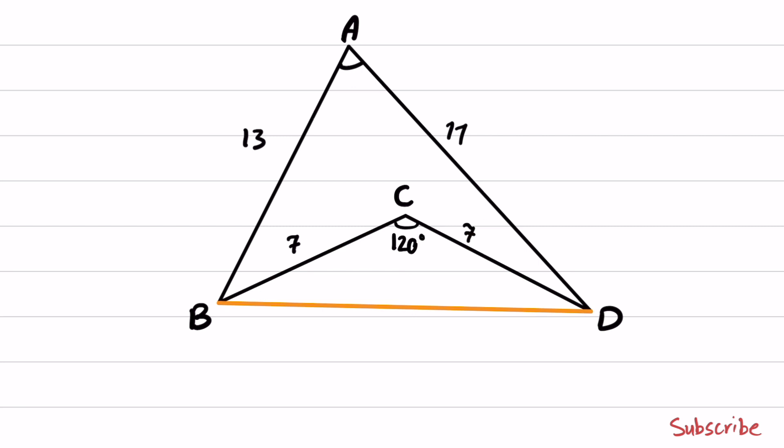We know that in an isosceles triangle, if you plot the altitude, it's going to divide the base into two equal sections.